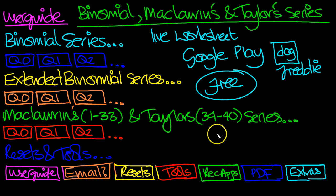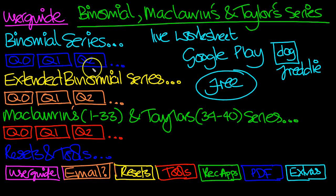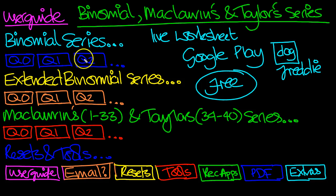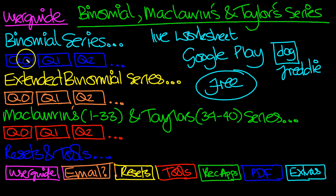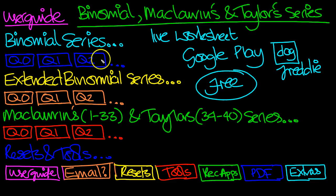You're welcome to download any of them of course. This one's on Binomial, Maclaurin's and Taylor's Series. I'll just take you through the topics we're going to cover. We start with Binomial Series — there's about 30 questions on the Binomial Series. Each section starts with an introductory question just to get you started and make you feel comfortable with the subject. We derive the formula in question naught and then use it in the subsequent questions.